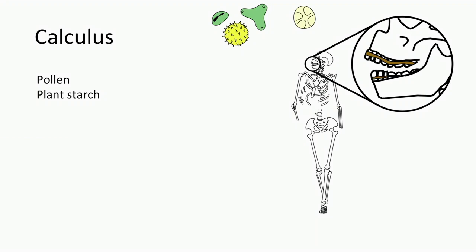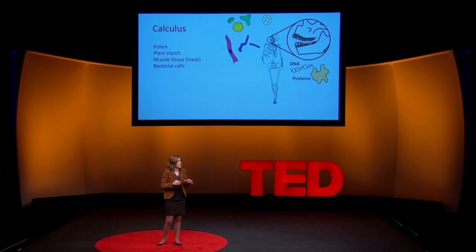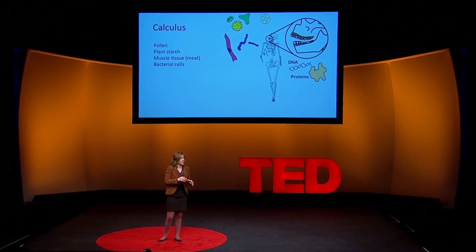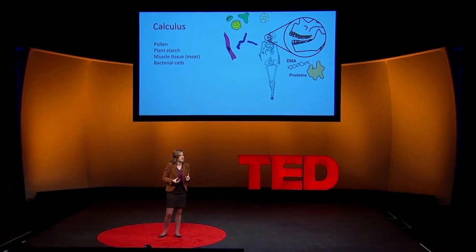And so previous studies had only focused on microscopy. They'd looked at dental calculus under a microscope, and what they had found was things like pollen and plant starches, and they'd found muscle cells from animal meats and bacteria. And so what my team of researchers wanted to do is say, can we apply genetic and proteomic technology to go after DNA and proteins? And from this, can we get better taxonomic resolution to really understand what's going on?